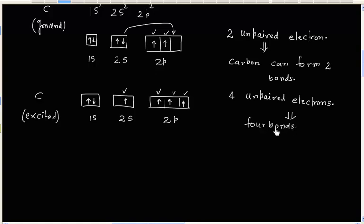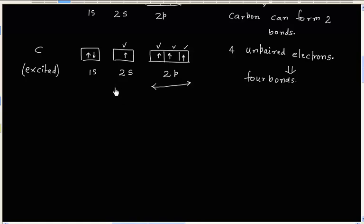But these bonds will not be identical. Because for 3 bonds, the 2p atomic orbital will be used, and for 1 bond, the 2s atomic orbital will be used. So in this case, all bonds will not be the same strength and will not have the same bond length — that is, the bonds are not identical. So all C-H bonds are not identical.